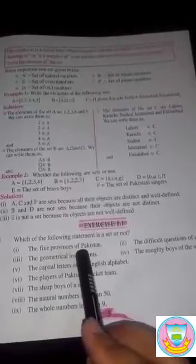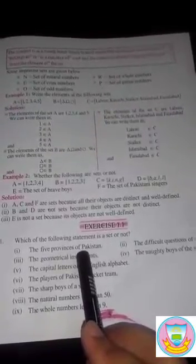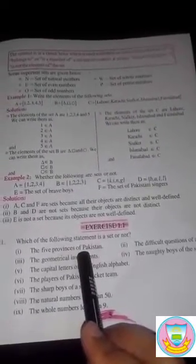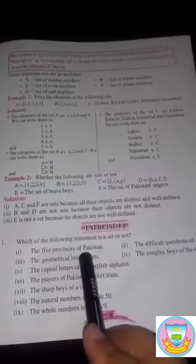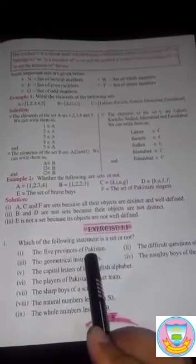Okay, the first question, the five provinces of Pakistan. How many provinces of Pakistan are there? There are five provinces of Pakistan. So this is a true statement, well-defined statement. So we can say that this is a set.